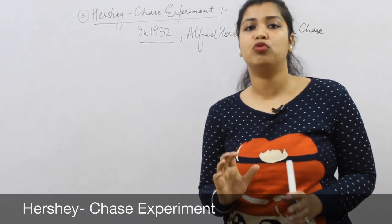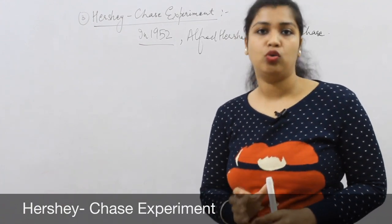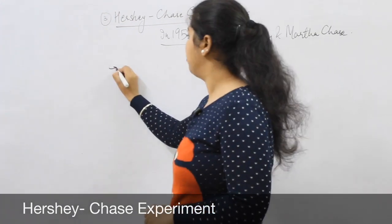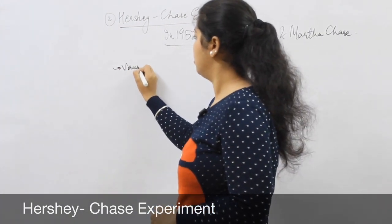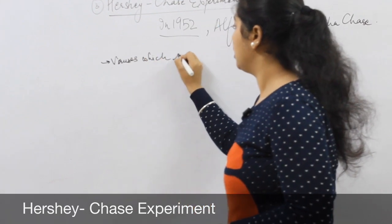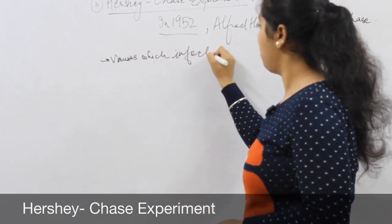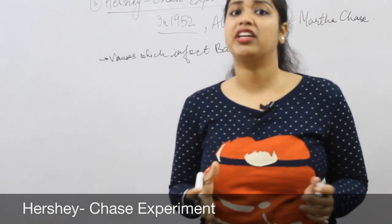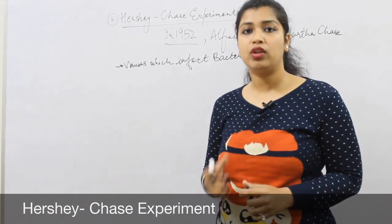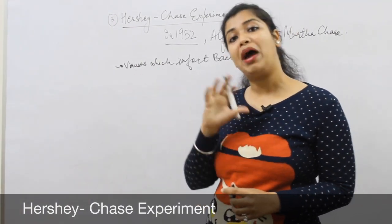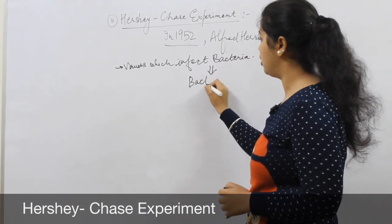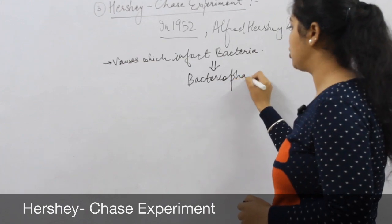Is experiment se finally proof ho gaya tha ki DNA genetic material hota hai — which Avery, MacLeod and McCarty's experiment had not been able to fully prove. So what did they do? They took viruses which infect bacteria. They took those viruses jo bacteria ko attack karte hain, and such viruses are called bacteriophages.